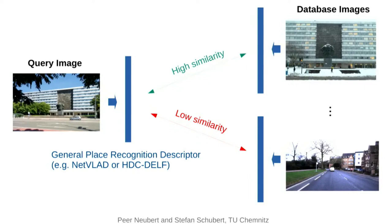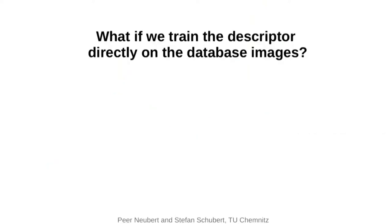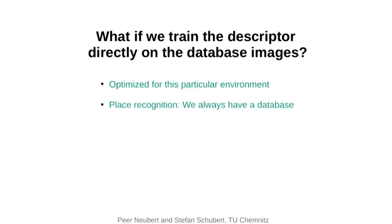However, this NetVLAD model does not work well for an open natural environment like the Norland dataset. But we can assume that NetVLAD trained on natural images more similar to Norland would create a better place recognition model. Thinking even further: what if we train NetVLAD directly on the Norland database images? Or more generally, what if we train any descriptor directly on the database images? The hope is that the descriptor is then optimized for this particular environment.